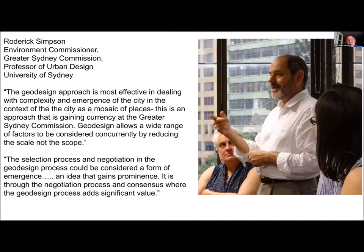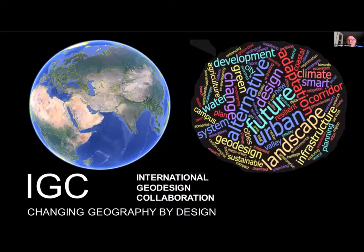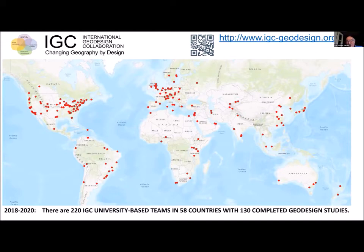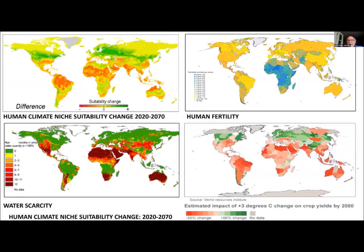Roderick Simpson, Commissioner of the Greater Sydney Commission, wrote: 'The selection process and negotiation in the geodesign process could be considered a form of emergence, an idea that gains prominence. It is through the negotiation process and consensus where the geodesign process adds significant value.' How do we deal with this globally? In 2018, Tom Fisher, former Dean at Minnesota, Brian Orland, and I decided to start a global collaboration. We now have 220 university-based teams in 58 countries with 130 completed geodesign studies — not including private companies, of which there are about 200 studies done already. We're dealing with these issues globally and regionally, and now nationally.